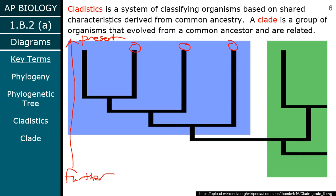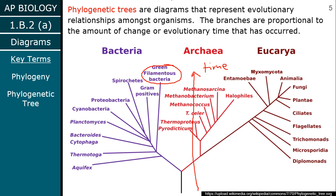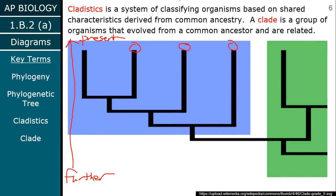Cladistics is basically our system of classifying these organisms. Phylogenetic trees are often called cladograms — they're technically different, but for us they're going to be the same thing. It's our visual representation of evolutionary relationships. As you actually make these trees, we're going to start looking at clades — organisms that all evolved from a common ancestor.